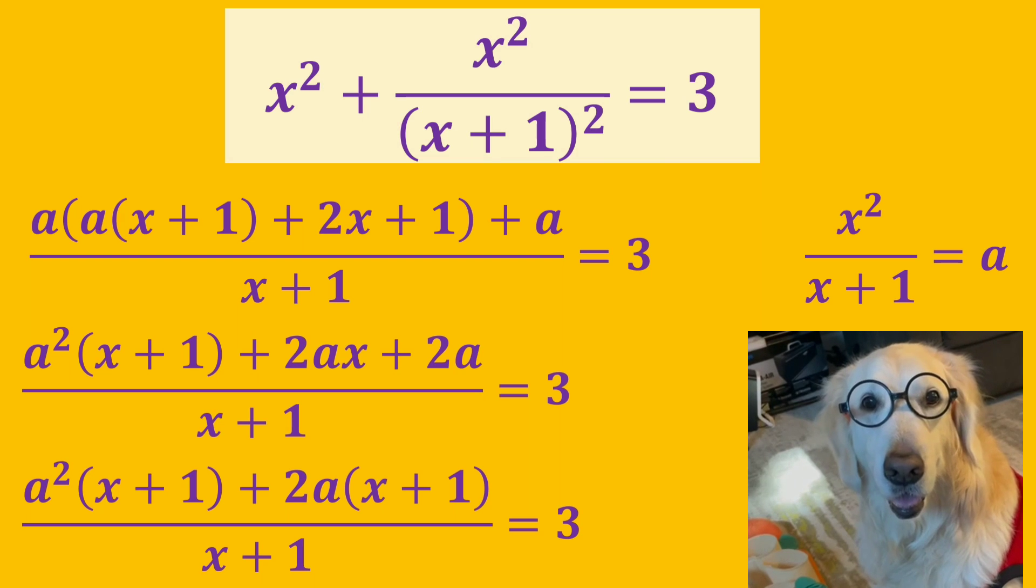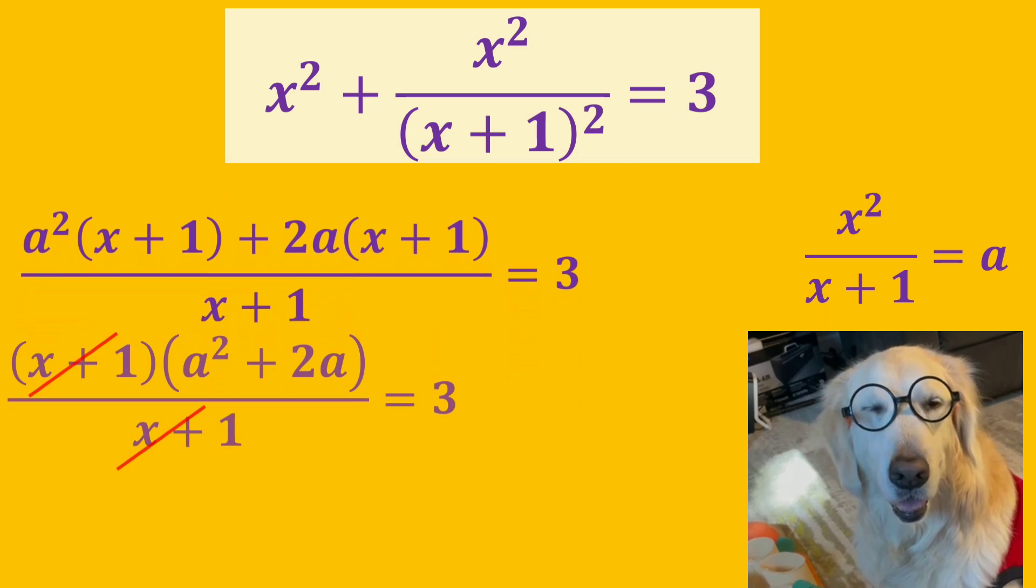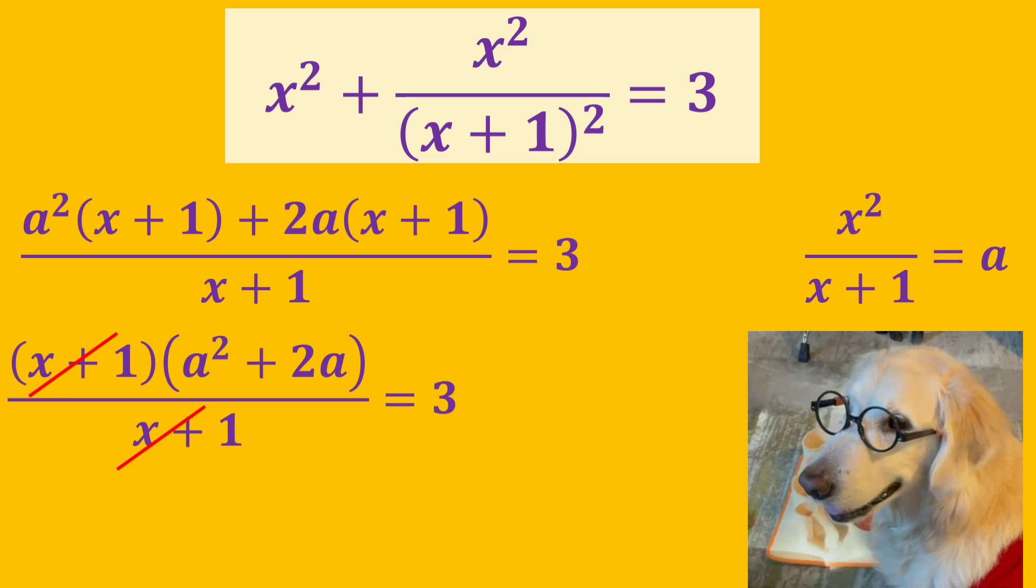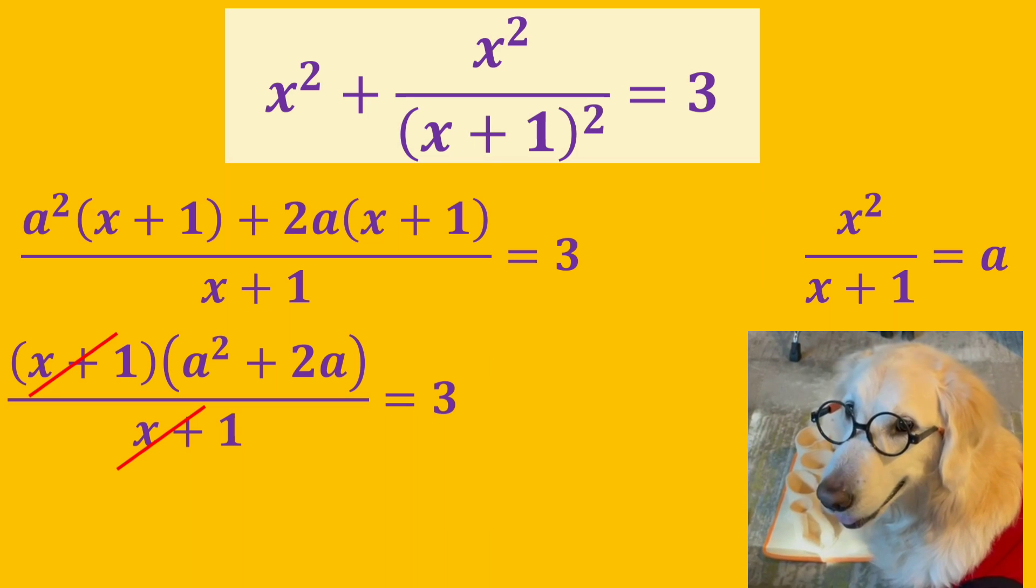Now we have a pattern here. Do you see it? Yes, we need to factor out x plus 1 and then both x plus 1's cancel each other out.